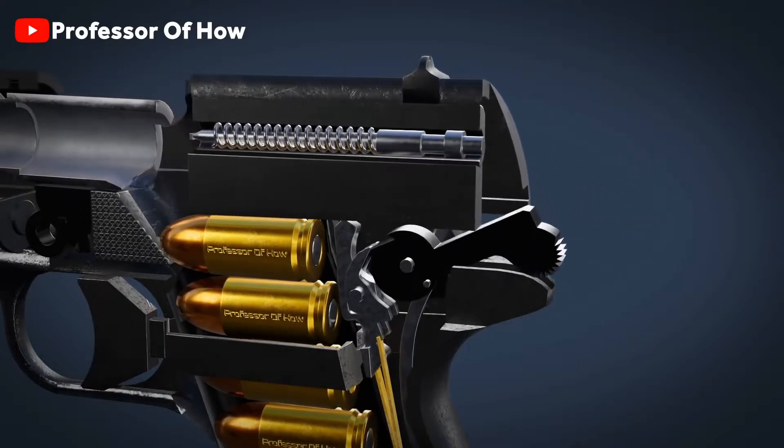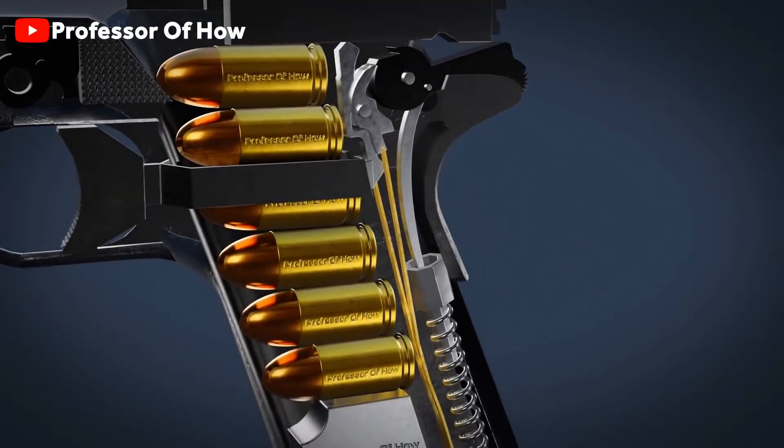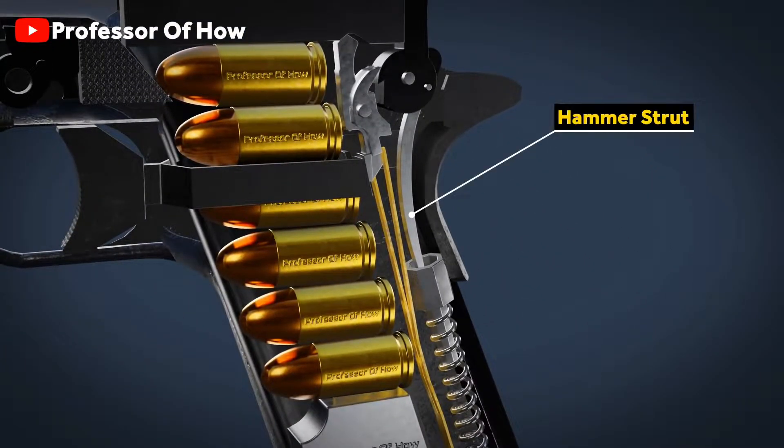The fifth and most crucial action is, slide when going backward rotates this hammer. This part of the gun is known as hammer strut, and this spring down below is known as main spring.